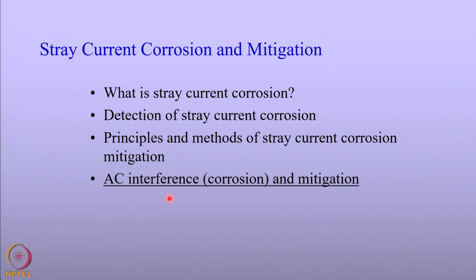Lastly, we will be covering the topic of AC interference and mitigation. We will notice that AC interference is a major problem in terms of safety hazards, but it can also lead to corrosion issues. In this lecture, we will be focusing more on AC interference as related to corrosion of the structures.